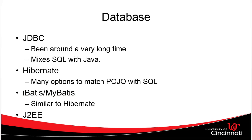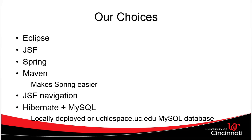For the database, we could use JDBC, which puts SQL statements directly in our Java code — mixing concepts that shouldn't be mixed. Hibernate is pretty common and allows XML mapping between our plain old Java objects or DTOs and SQL. iBatis and myBatis are similar to Hibernate, just different options. There's also a J2EE persistence model that's a bit newer. Hibernate is very common in the field, so that's most likely the one we'll go with.